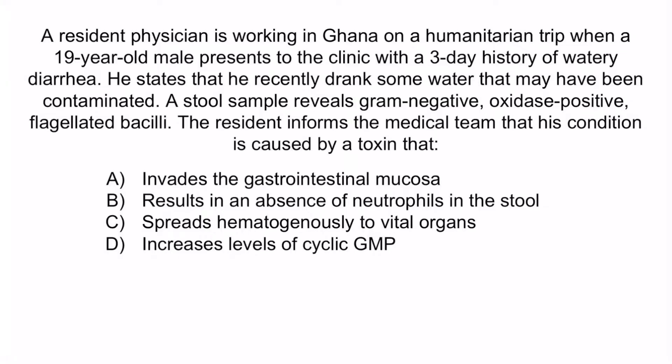Now that we've covered the image, let's review with a question. A resident physician working in Ghana on a humanitarian trip sees a 19-year-old male with a three-day history of watery diarrhea after drinking possibly contaminated water. A stool sample reveals gram-negative, oxidase-positive, flagellated bacilli. The resident informs the team that his condition is caused by a toxin that: A) invades the gastrointestinal mucosa, B) results in an absence of neutrophils in the stool, C) spreads hematogenously to vital organs, or D) increases levels of cyclic GMP. The key clues — Ghana as a developing country, watery diarrhea, contaminated water, and the stool findings — collectively point to a diagnosis of Vibrio cholerae.